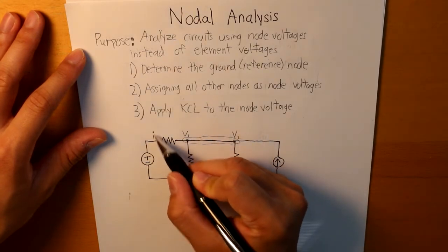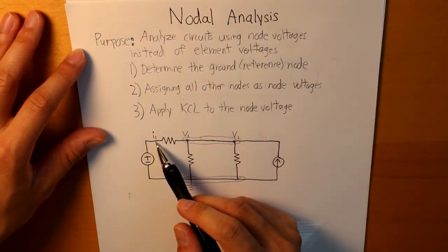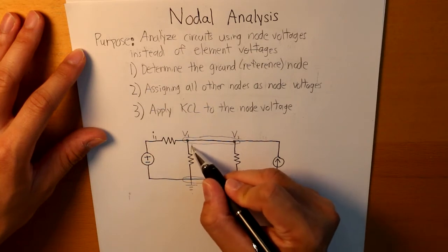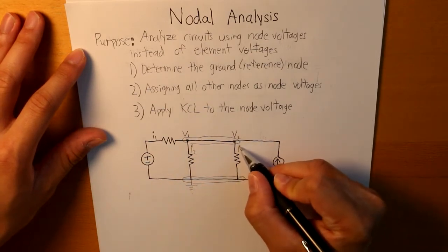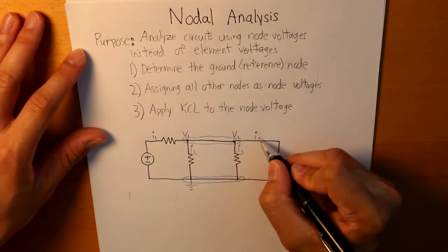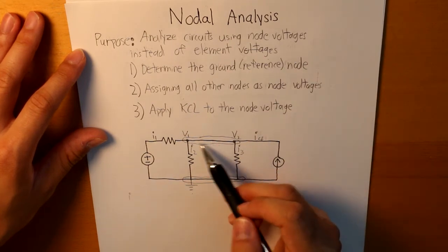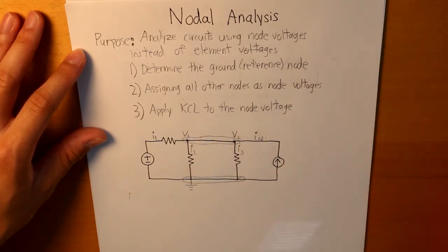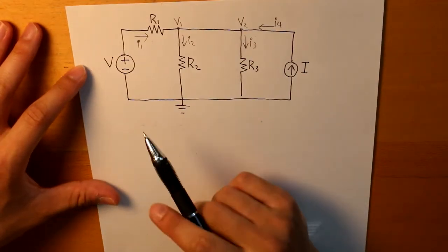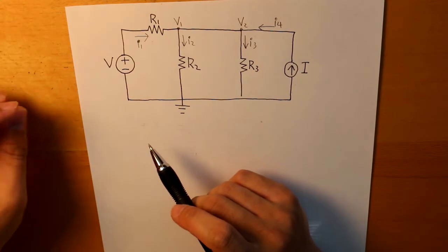So there's current flowing from here, current flowing from here, current flowing from here, and current flowing from here. We don't need to worry about this, but when we touch upon super node, then we have to consider the practicality of it. But in this video, we will just be touching upon the simple basics of how nodal analysis works.